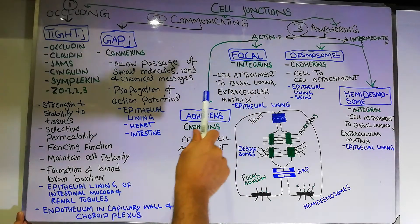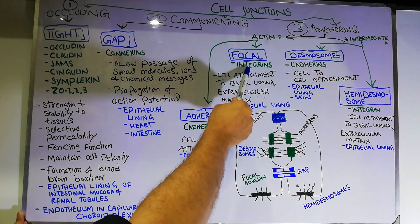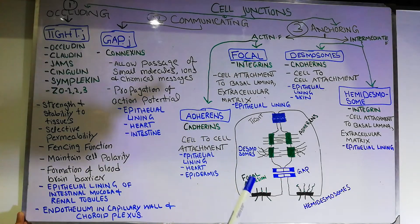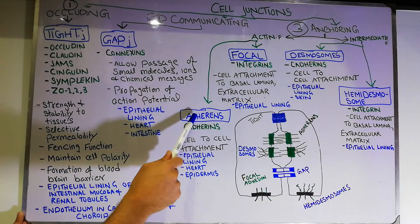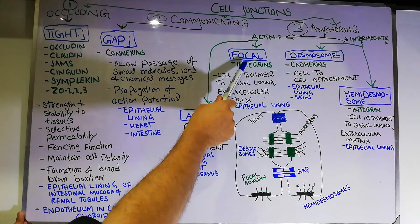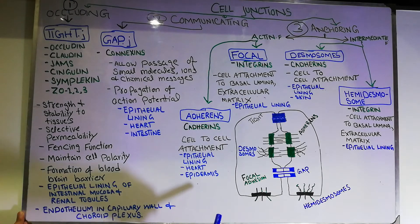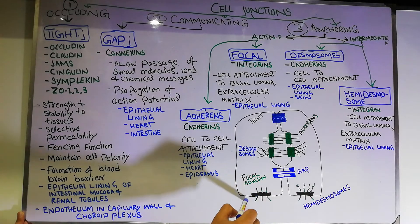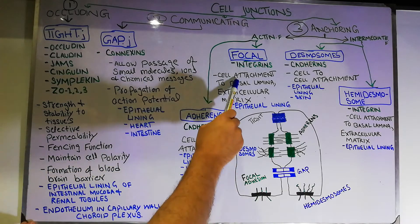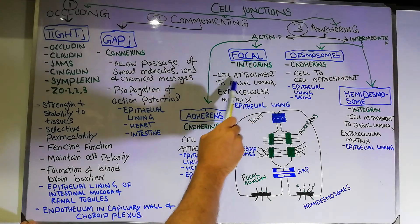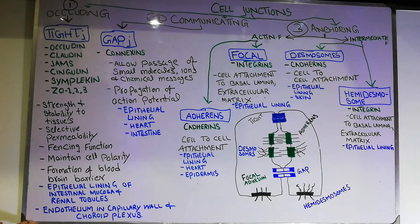Focal junctions are made of the protein integrin, while adherence junctions are made of caderins. Focal junctions are not intercellular — they are junctions between a cell and its extracellular material. They provide cell attachment to the basal lamina, attaching the cell to the basal layer. Focal junctions are also present in the epithelial lining, which may be in the intestine, in the capillaries, and some other places in the human body.